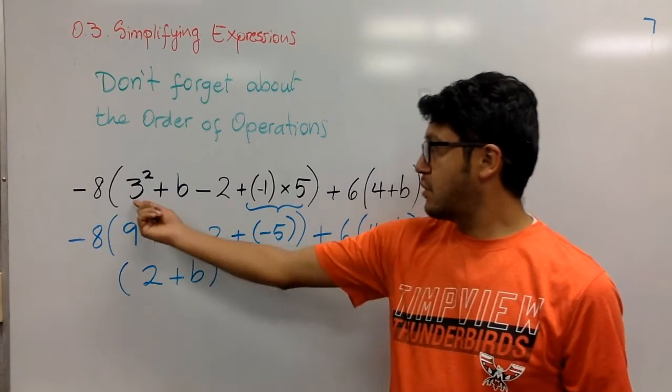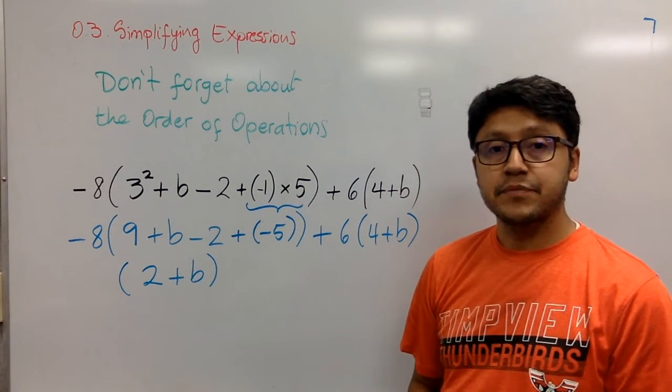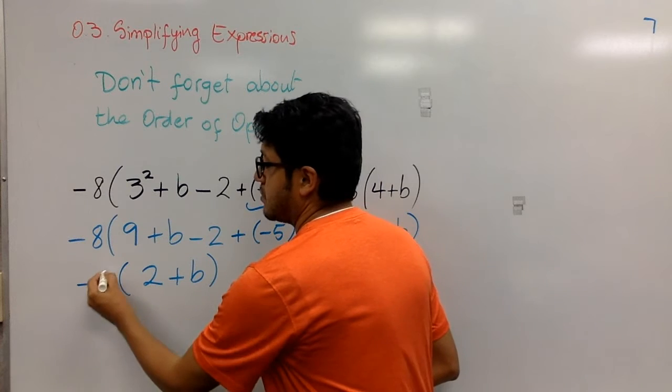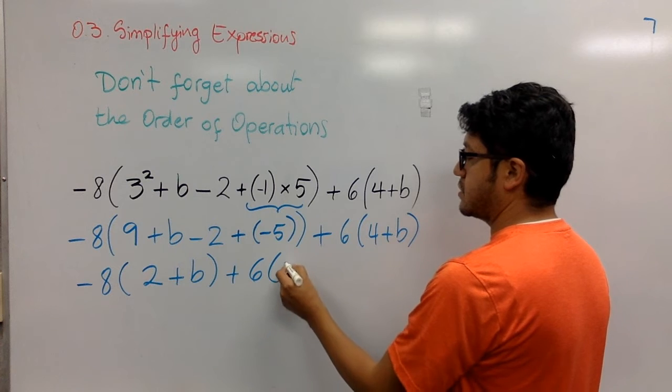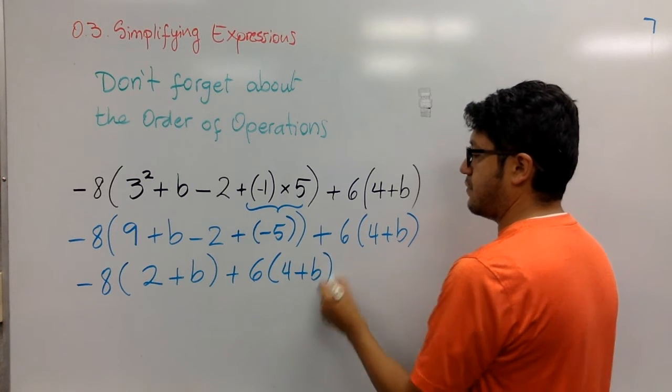That's the simplest form of this expression at the beginning. That is going to be multiplied by negative 8. And then after I do that, I'm going to add the product of 6 and 4 plus b.